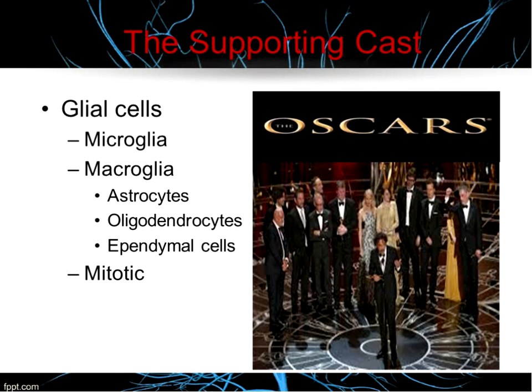As for macroglia cells, there are a couple of different types. The most common are the astrocytes, found primarily in the gray matter, which give structural support to neurons. Then we have oligodendrocytes — specialized cells that produce the myelin sheath of nerve fibers of the central nervous system, mainly found in the white matter. Ependymal cells line the brain ventricles and play a role in the secretion of cerebrospinal fluid. Whenever we talk about tumors of the central nervous system, most commonly those tumors involve glial cells.